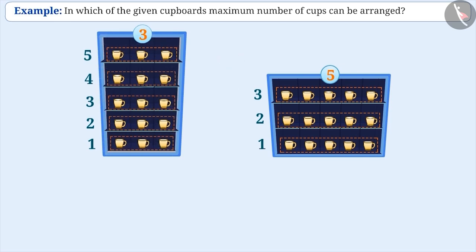In the first cupboard, there are five rows and in each row only three cups can be arranged. So here, you can arrange a total of five times three cups. Now, think about the second cupboard — the arrangement is a bit different.